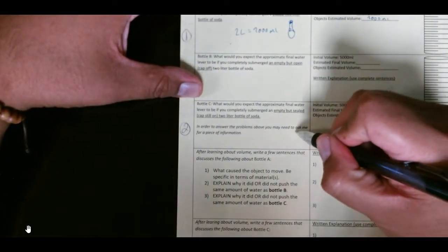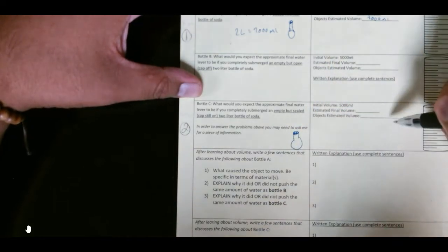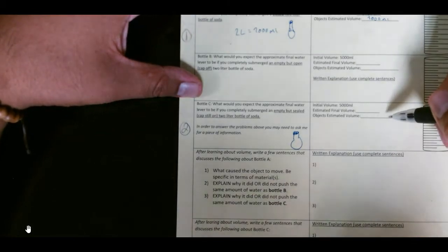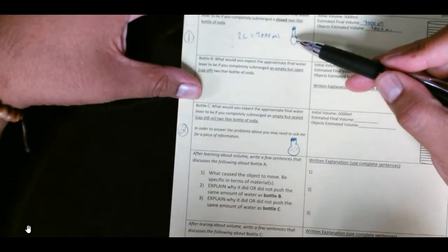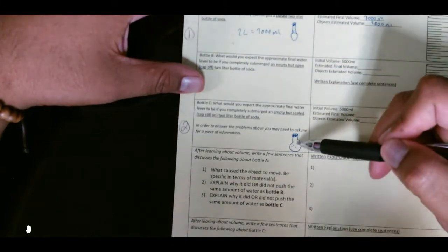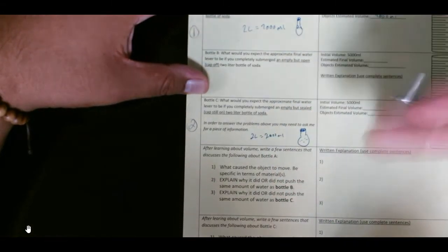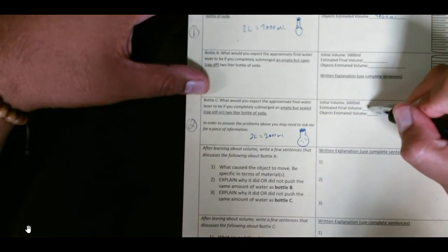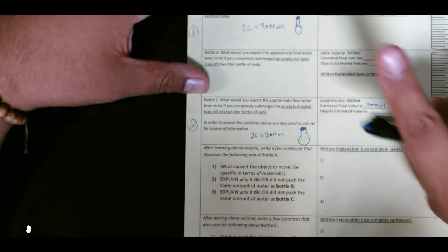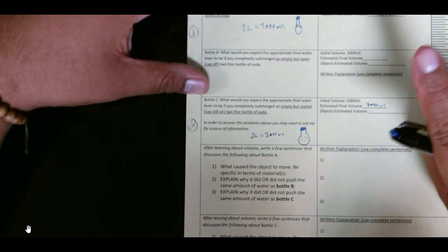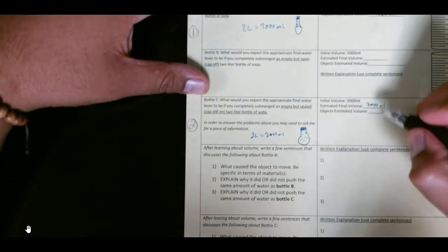And so later on, we're going to come to find out that 2,000 mL represents the soda, but not the bottle. Alright, anyway, so let's move on to number two. Number two, it says you have a sealed 2-liter. What is its estimated volume? Well, how much air is inside of here? Well, if 2,000 mL of liquid fits in here, well, then 2,000 mL of air are in here.